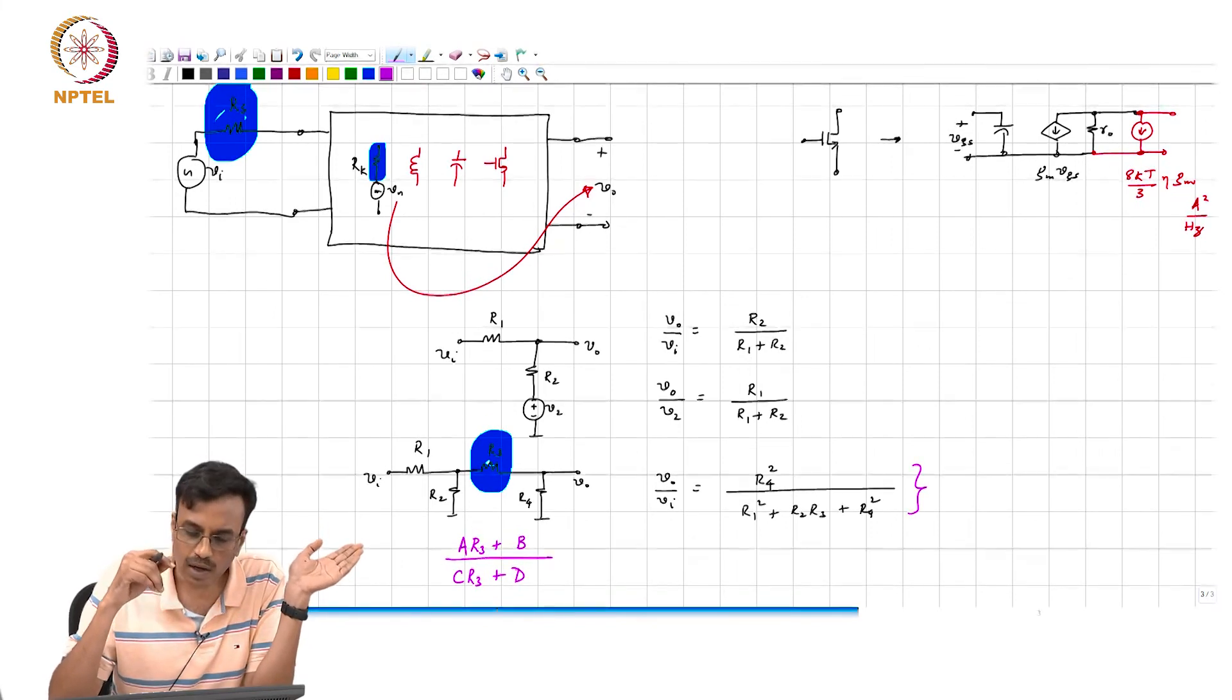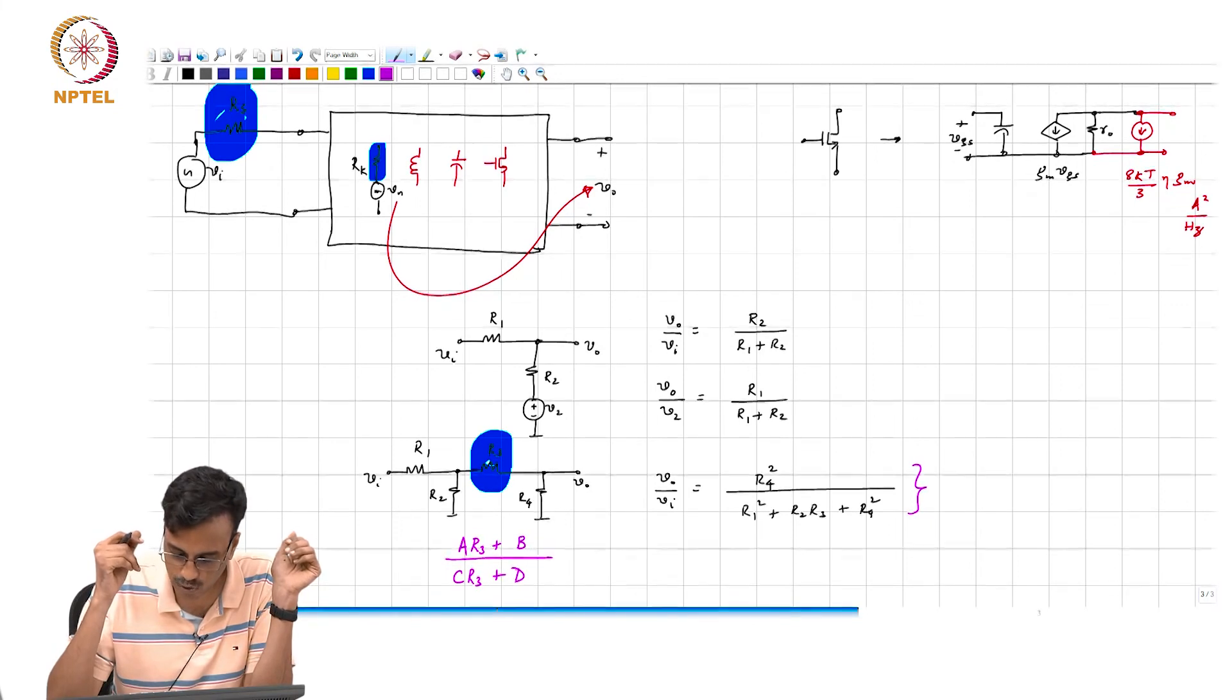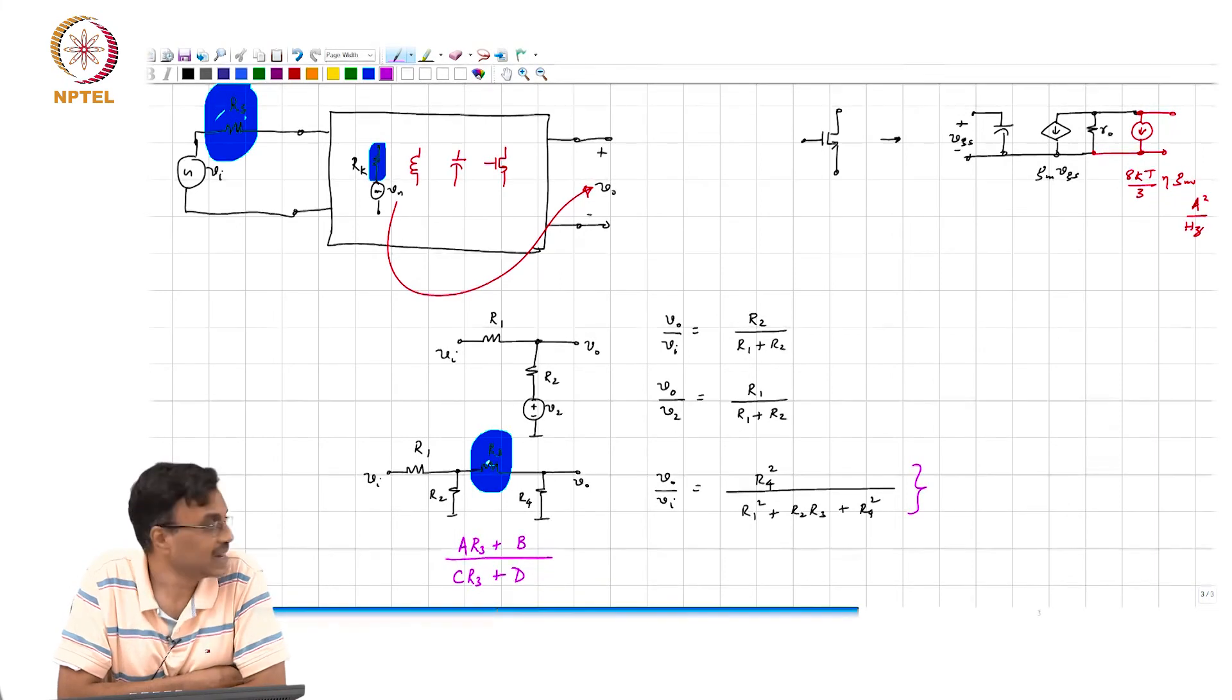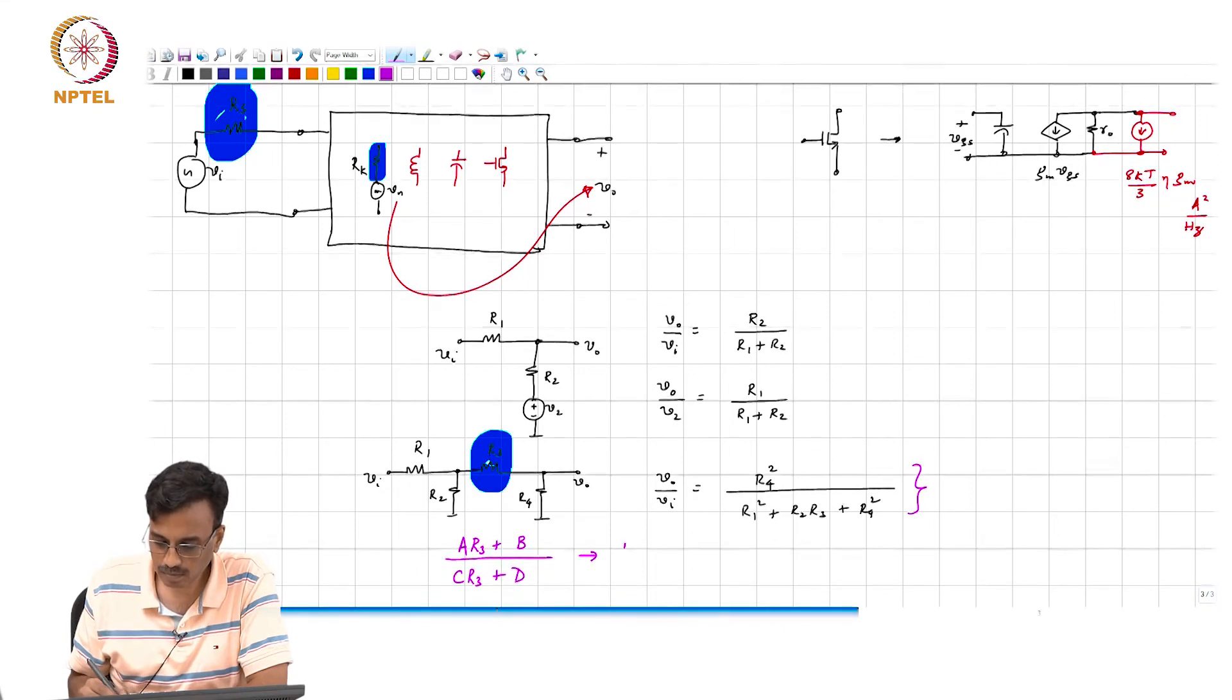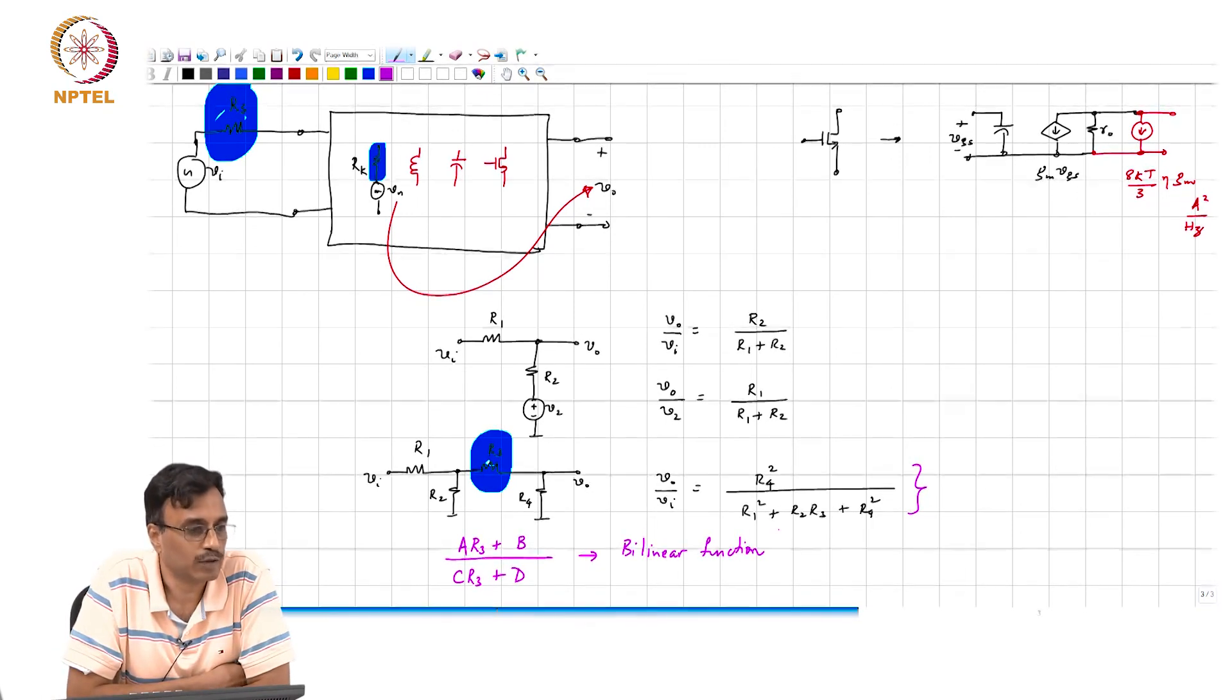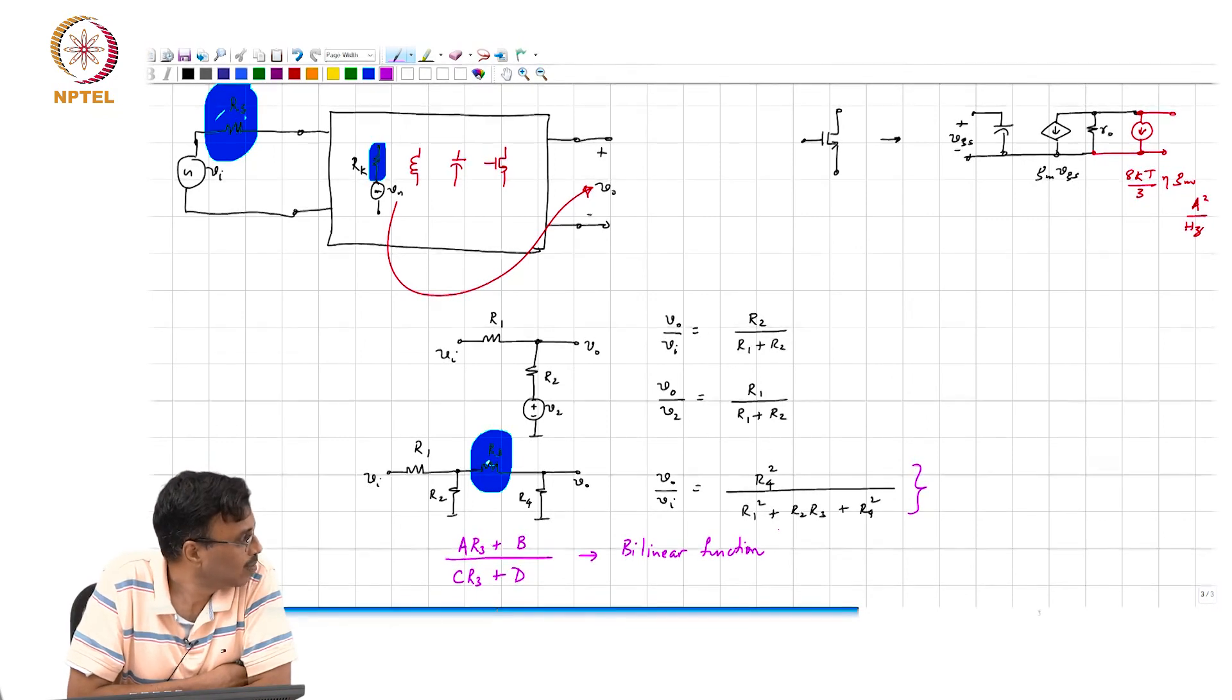It is entirely possible that you get a numerator or denominator which does not contain r3 at all, which is simply saying that both a and c are 0. But if r3 appears, it will appear only in the first power. It is actually pretty straightforward to see and we will see that tomorrow. This is telling you that if you have an element, any transfer function that you can form will be a bilinear function. It turns out that any transfer function that you form will turn out to be what is called a bilinear function of a particular element.